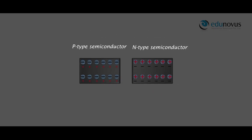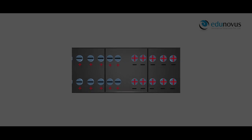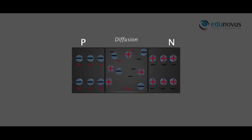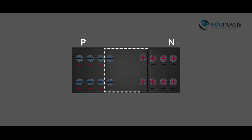The combination of P-type and N-type semiconductors results in a PN junction diode. At the junction, diffusion takes place. Due to the higher concentration of electrons in the N section, electrons diffuse from the N side to the P side, leaving behind an ionized positive charge which is immovable. As holes and electrons continue to diffuse, a layer of negative charge on the P side and a layer of positive charge on the N side of the junction is developed. This junction region is known as the depletion layer.